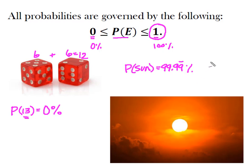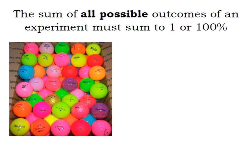Now let's look at the second law. So the second law probability tells us that the sum of the probabilities of all possible outcomes from an experiment must sum to 1 or 100%.